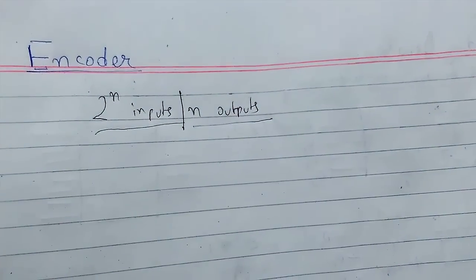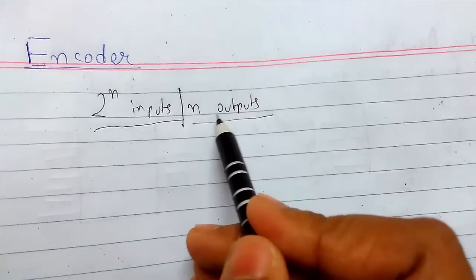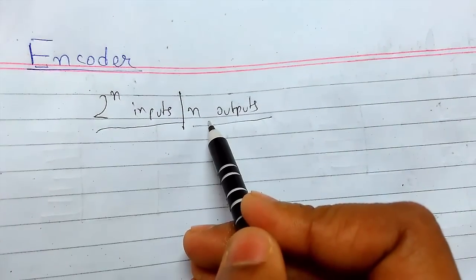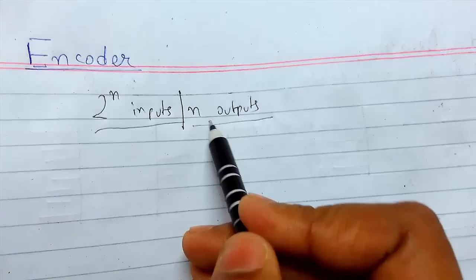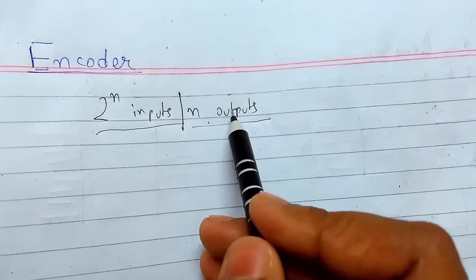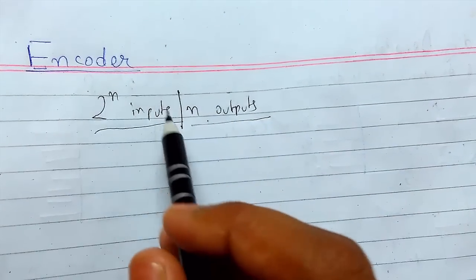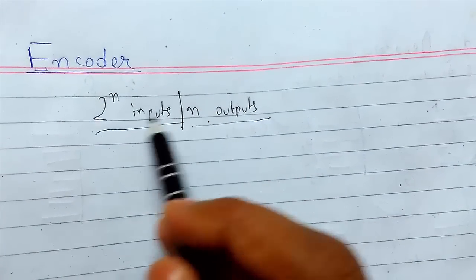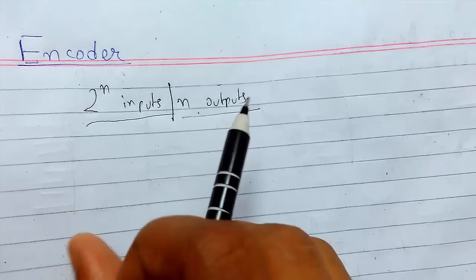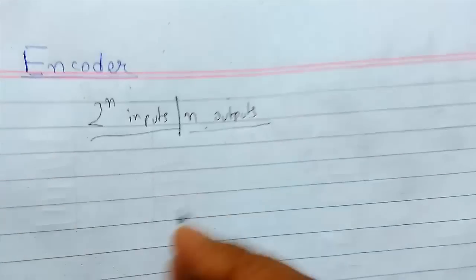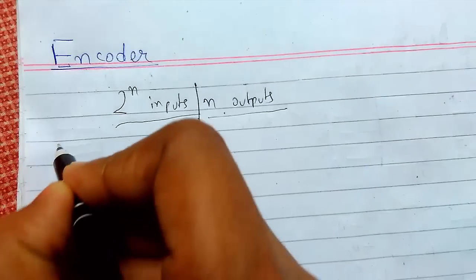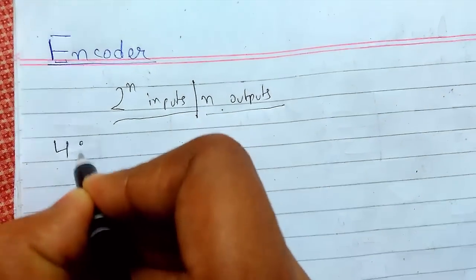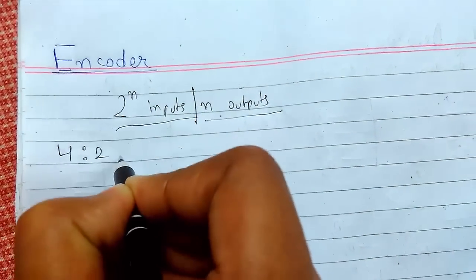Suppose when n is equal to 2, we will have 2 outputs and 4 inputs. When n is 3, we have 3 outputs and 8 inputs. So firstly we will be seeing the 4-to-2 encoder.